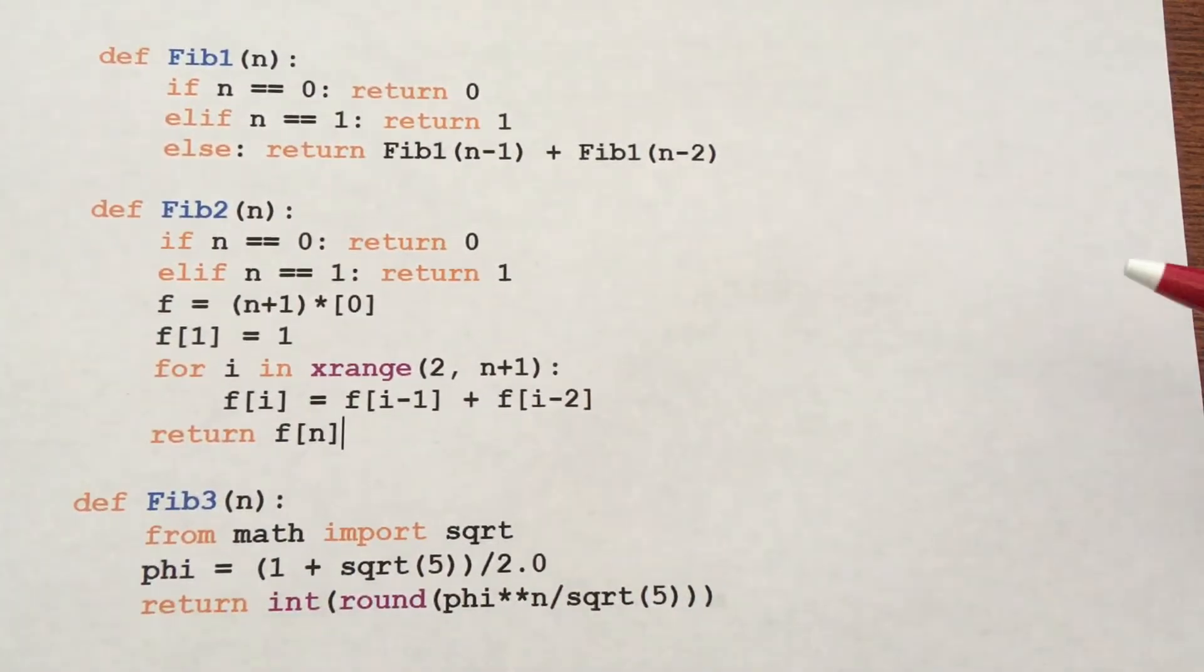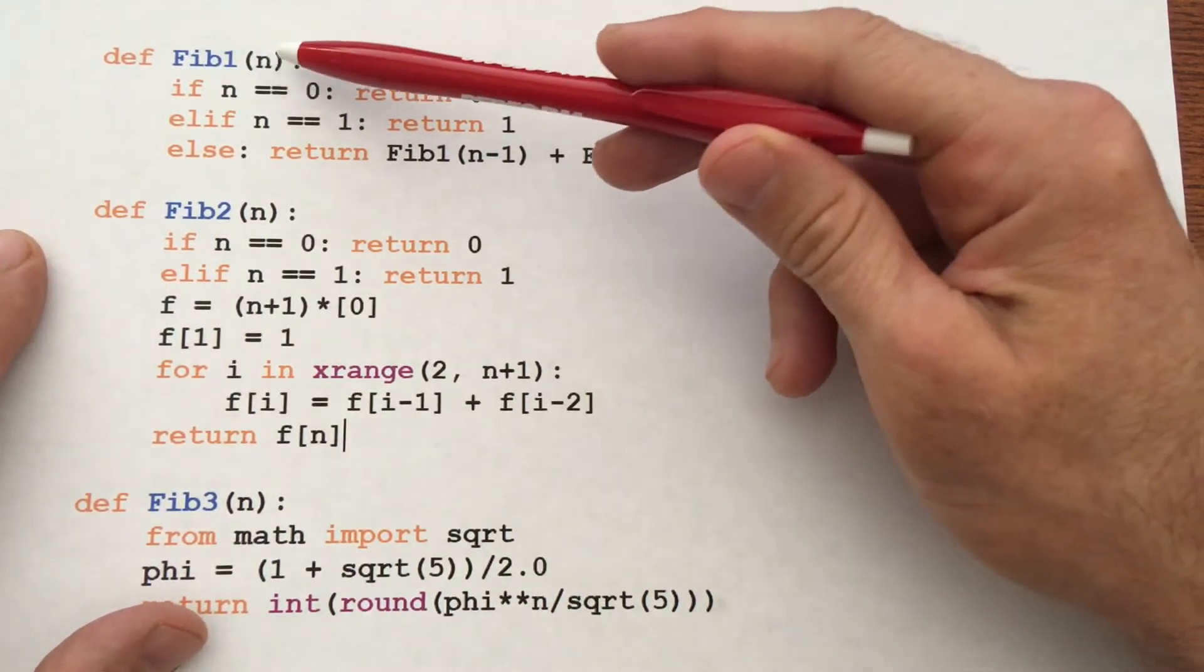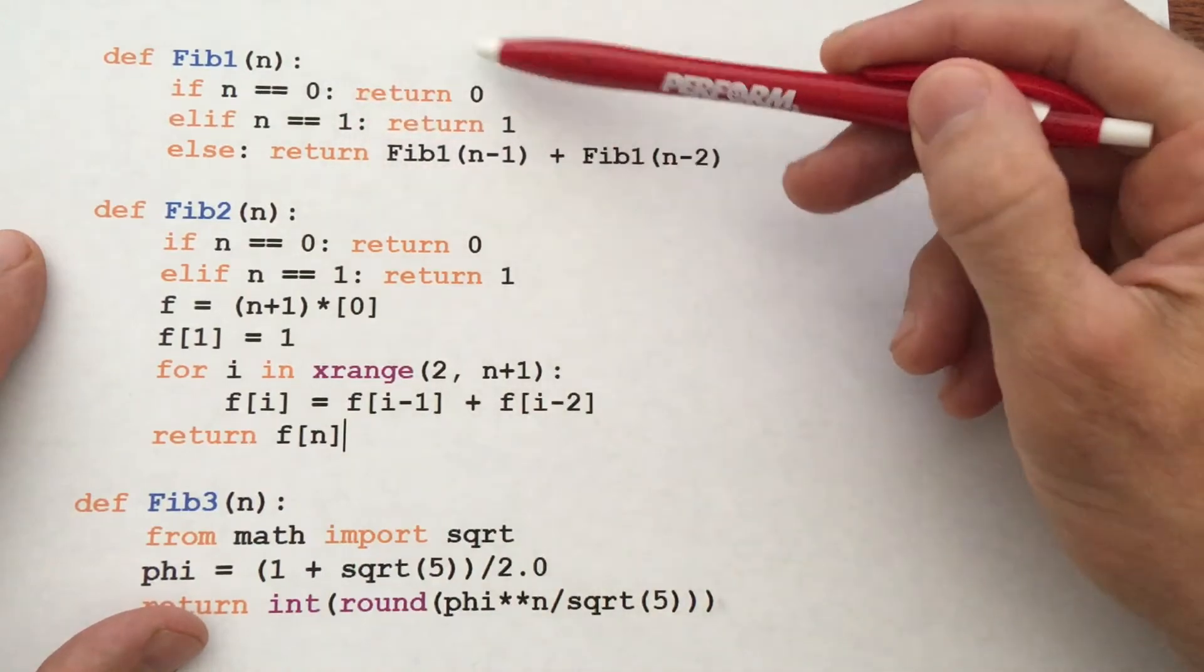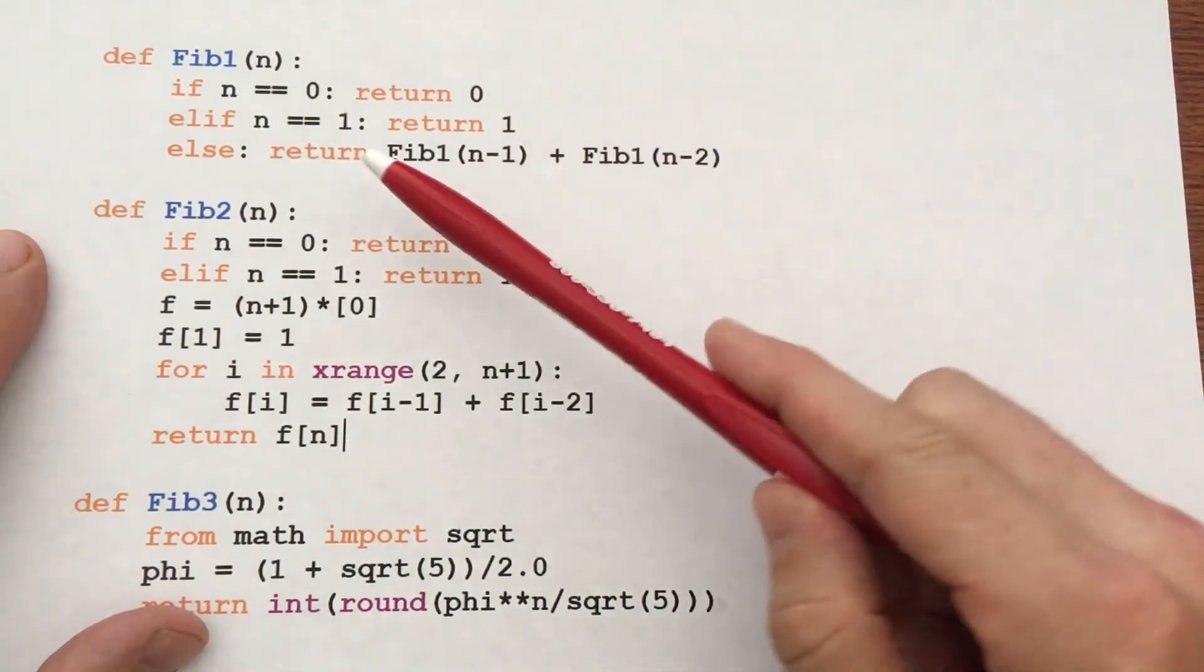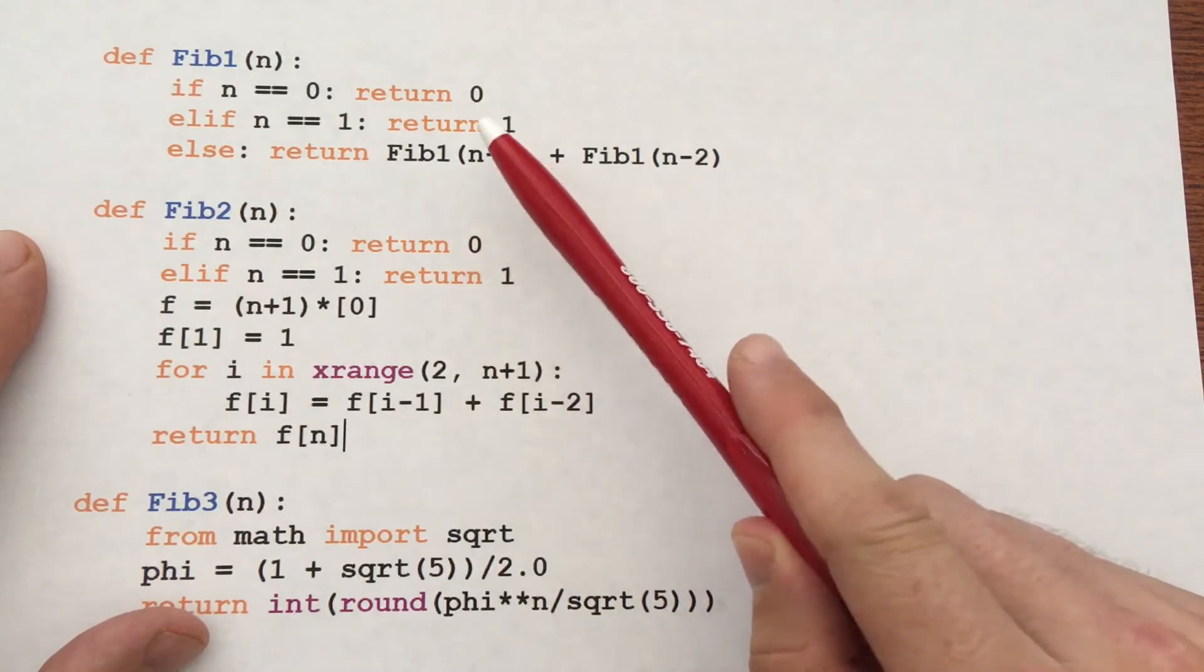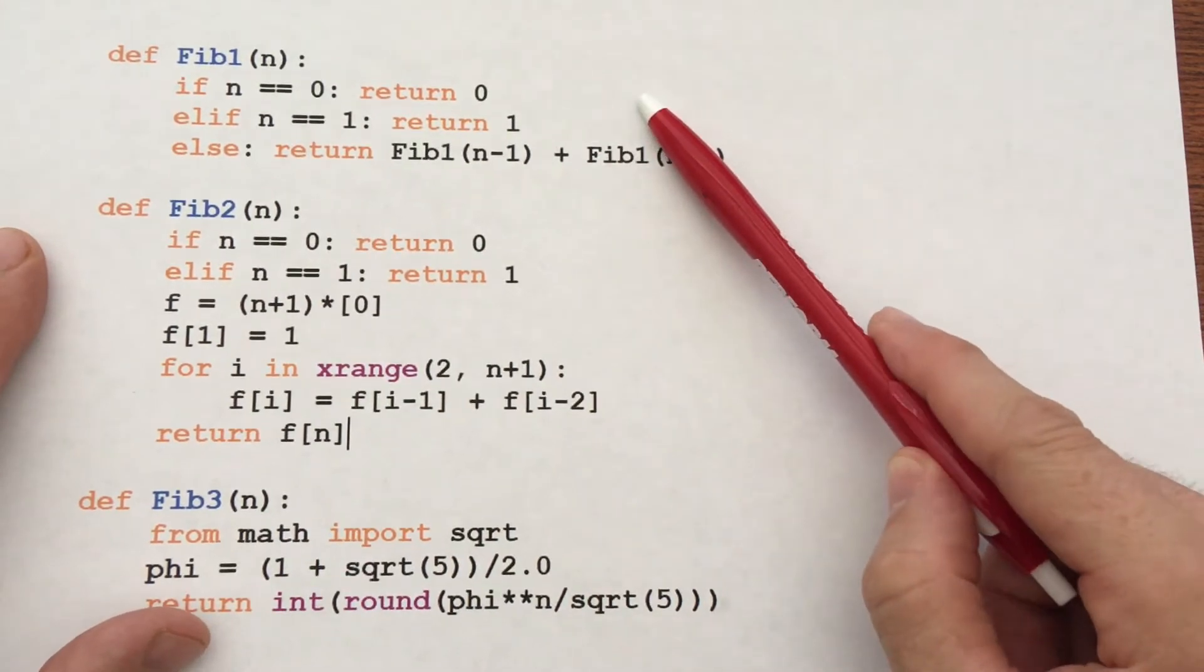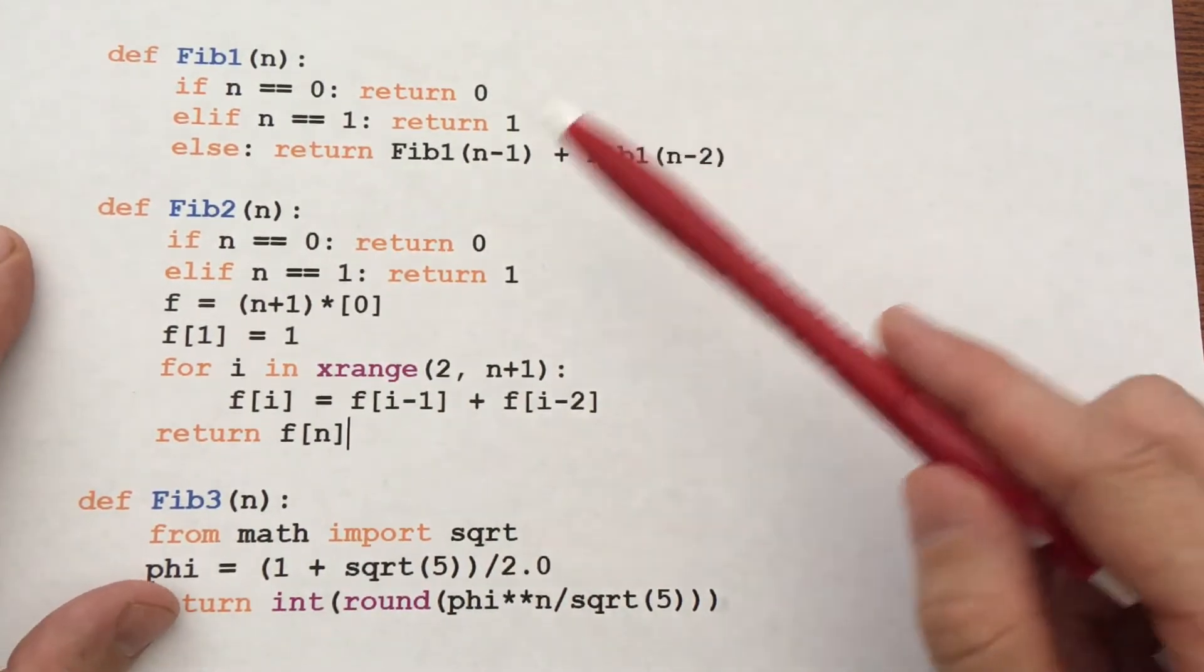Here are the three implementations of the Fibonacci sequence I want to compare. So fib1 is the standard recursive definition. If n is 0, return 0. If n is 1, return 1. Otherwise, make the recursive calls. It's fib of n minus 1 plus fib of n minus 2. Standard, just following the definition of the Fibonacci sequence.